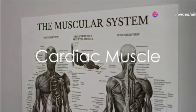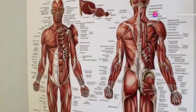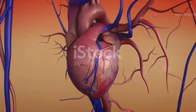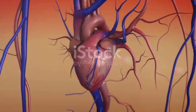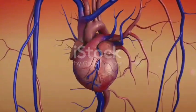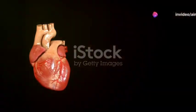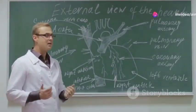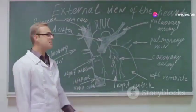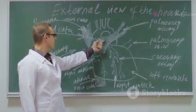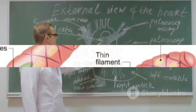Secondly, we have cardiac muscle, a unique type of muscle tissue found only in the heart. This muscle is responsible for the rhythmic contractions of our heart, propelling blood throughout our bodies. Unlike skeletal muscle, cardiac muscle operates involuntarily. It contains specialized structures known as intercalated discs, which enable coordinated contractions and efficient blood pumping.